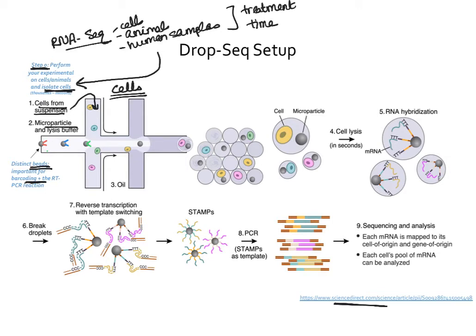The beads also have the components necessary for the PCR reaction. So once the correct barcode and the correct RNA has been attached to the bead, it actually performs the PCR reaction right there. These beads and cells come together in the tubing along with oil to form droplets, and every droplet has both a bead and a cell in it. When you put this through, you're not necessarily going to get every single bead and droplet into the same place — some droplets won't have anything, some will only have a cell or only a bead, and some will be perfect with exactly a cell and a bead together.